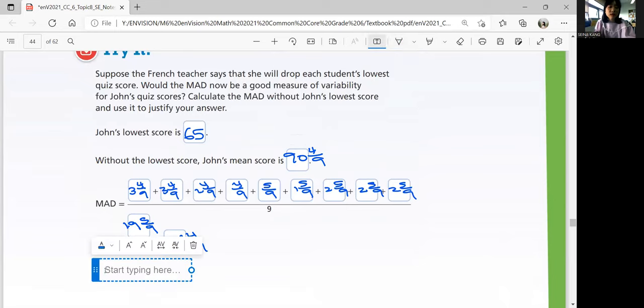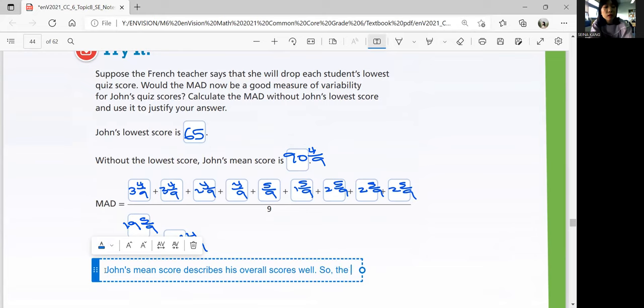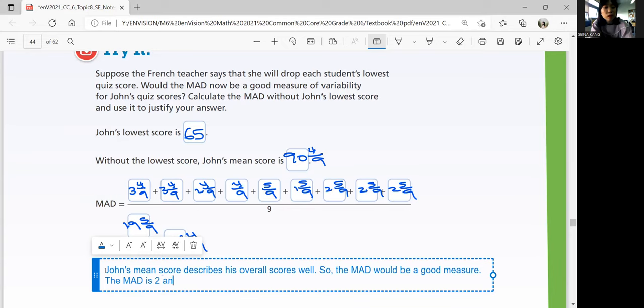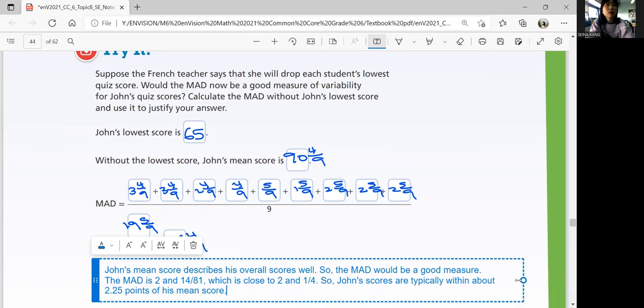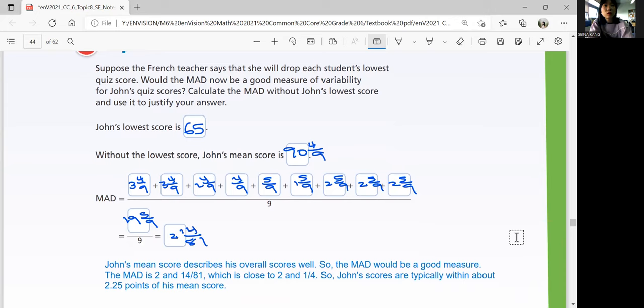I know that's a little bit complicated, but that's okay. We can use that to interpret our John's mean score. So John's mean score describes his overall score well now, because we don't have the outlier. So the MAD would be a good measure. The MAD is 2 and 14 over 81, which is close to 2 and 1 fourth. So John's scores are typically within about 2.25 points of his score. So that's great.